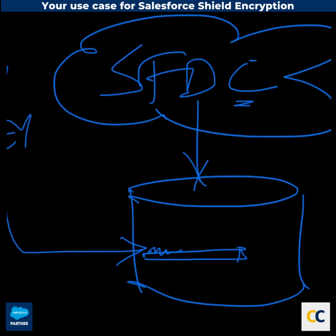The typical risk that you're addressing with this is that in the highly unlikely event that someone can actually get to that physical disk on which this record is stored, or if some internal database user gets to this record through some unauthorized means — that's the risk that you're covering.